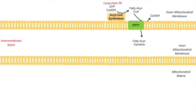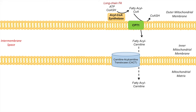Once we have fatty acyl-carnitine, that carnitine portion of the molecule will allow the fatty acyl chain to cross the inner mitochondrial membrane and enter the mitochondrial matrix. It does so through a transporter located within the inner mitochondrial membrane known as carnitine acyl-carnitine translocase, or CACT. This allows the fatty acyl-carnitine to cross the inner mitochondrial membrane and enter the mitochondrial matrix.